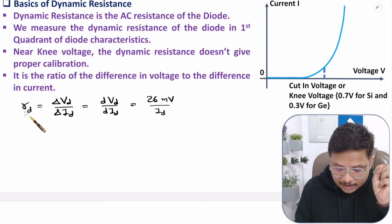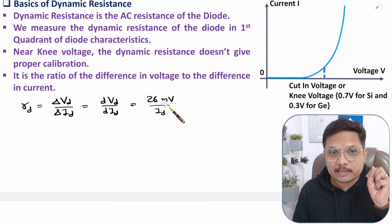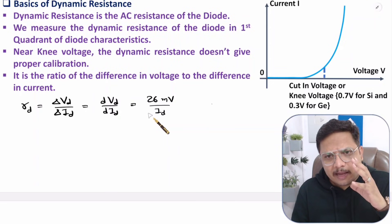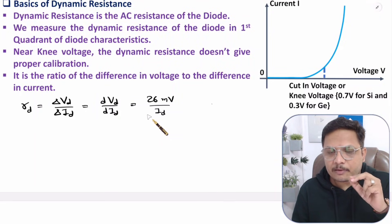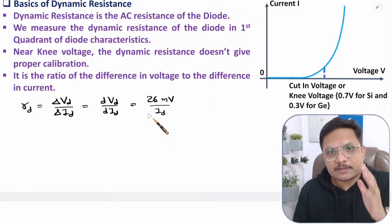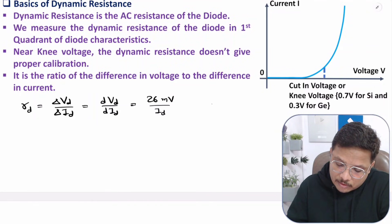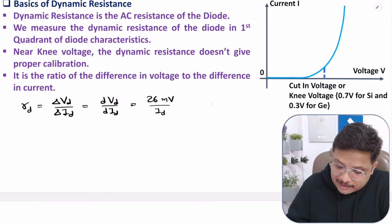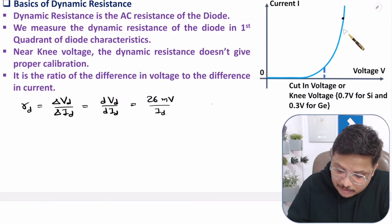Dynamic resistance equals 26 millivolts divided by ID — I'm going to derive this in this video. But before that, you need to understand how to calibrate dynamic resistance from its VI characteristics. You can observe here we have VI characteristics, and I want to calibrate it in this region.